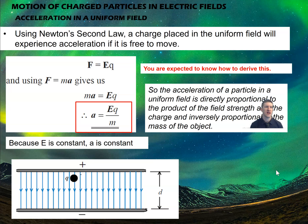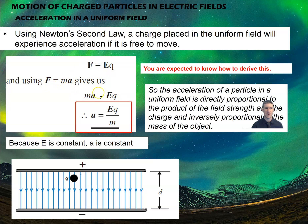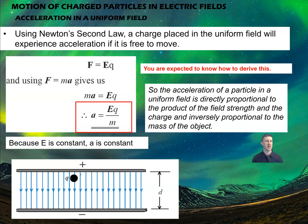Using Newton's second law, a charge placed in a uniform field will experience a constant acceleration — it has a force and a mass, so it must accelerate. We use F = qE and substitute F = ma: ma = qE, and rearranging gives a = qE/m. This is the derivation you're expected to know — how to derive the acceleration of a particle in an electric field. The acceleration is directly proportional to the product of electric field strength and charge, and inversely proportional to the mass. Since E is constant in a parallel plate setup, the acceleration is also constant regardless of where the object is.